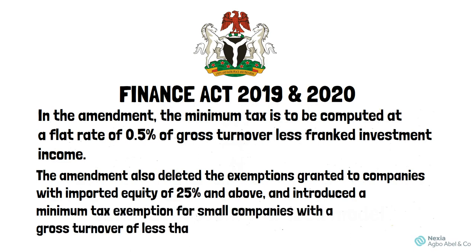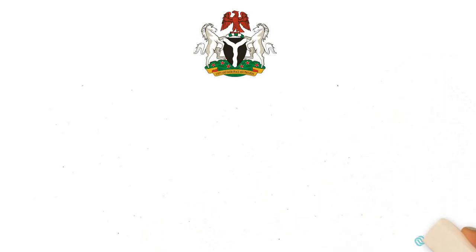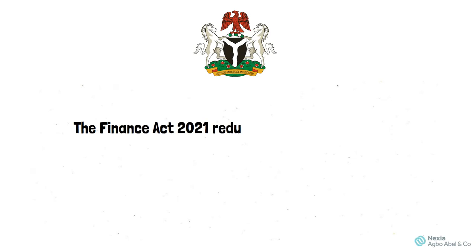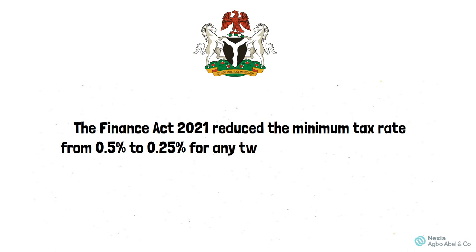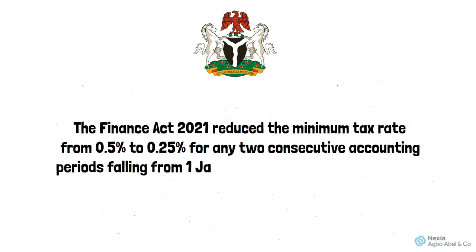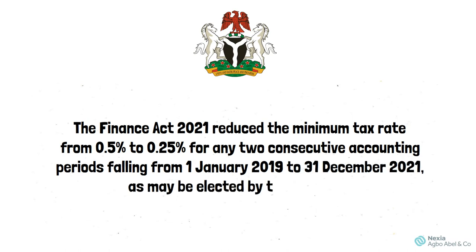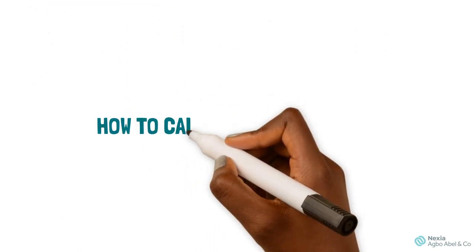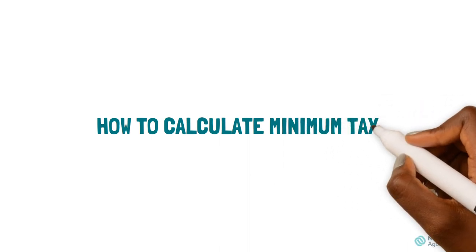The amendment introduced a minimum tax exemption for small companies with gross turnover of less than 25 million naira. The Finance Act 2021 further reduced the minimum tax rate from 0.5 percent to 0.25 percent for any two consecutive accounting periods falling from 1st January 2019 to 31st December 2021, as may be elected by the taxpayer. Now, let's look at how to calculate minimum tax.